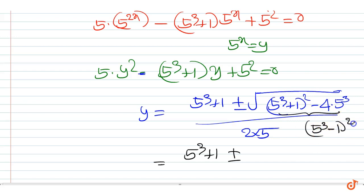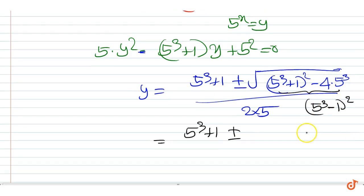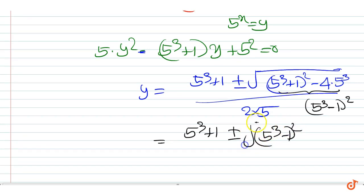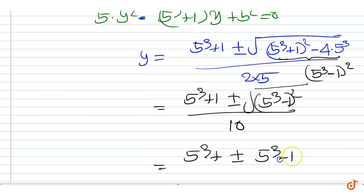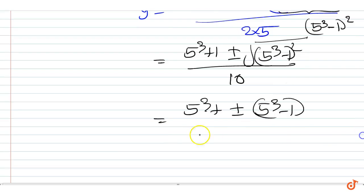The square root simplifies to 5 cubed minus 1, so y equals 5 cubed plus 1, plus or minus (5 cubed minus 1), all divided by 10.